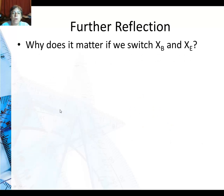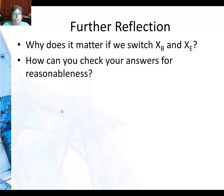So for further reflection, why does it matter if we switch x of b and x of e? Well, if I say one third of the way from the beginning point, that doesn't mean I'm one third of the way from the ending point. That's going to be a different fraction. And how can you check your answers for reasonableness? You should make sure that your part way point is part way between. If it's a half or less than half, it needs to be closer to x of b. Also, graphing is a wonderful way to check your answer for reasonableness.